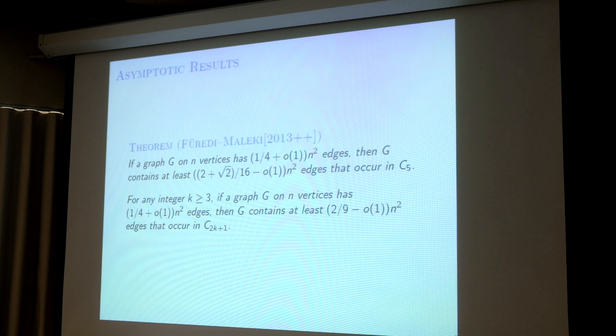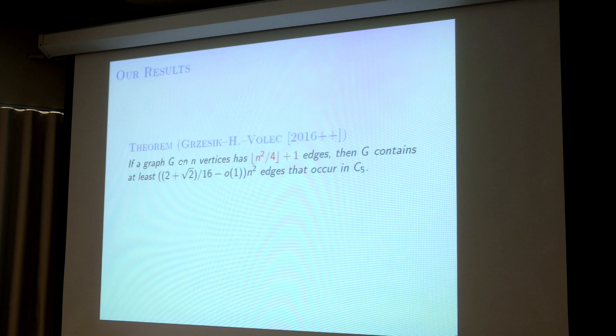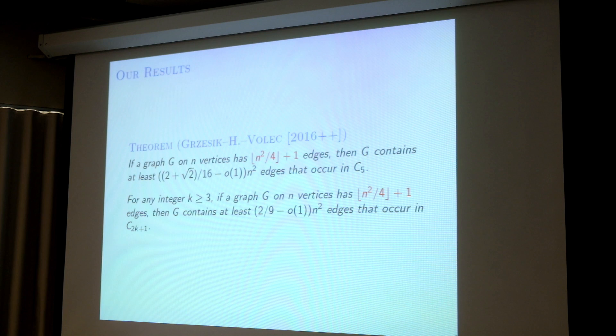But the question asked by the conjecture is for graphs with exactly n²/4 + 1 edges, which is inside the little-o. We are able to prove that case. We prove that if a graph G on n vertices has exactly n²/4 + 1 edges, then G contains at least (2 + √(16) - o(1)) times n² edges that occur in C5. And the same type of result holds for C7, C9, and longer odd cycles: for such graphs it contains at least 2/9 - o(1) times n² edges that occur in C_{2k+1}.